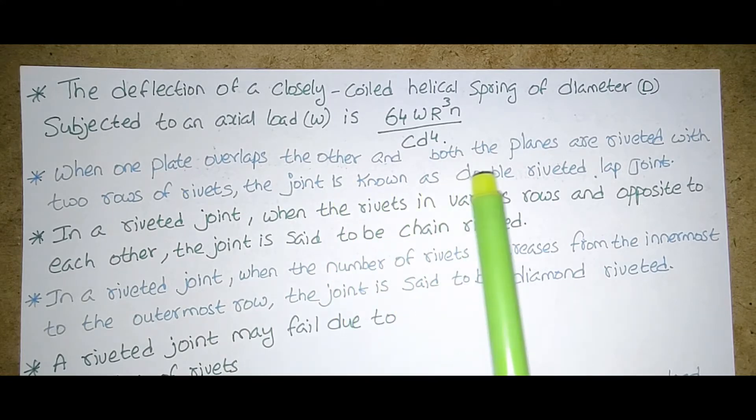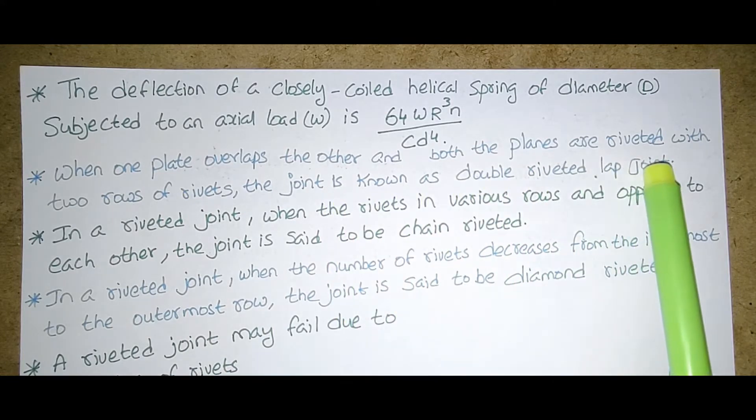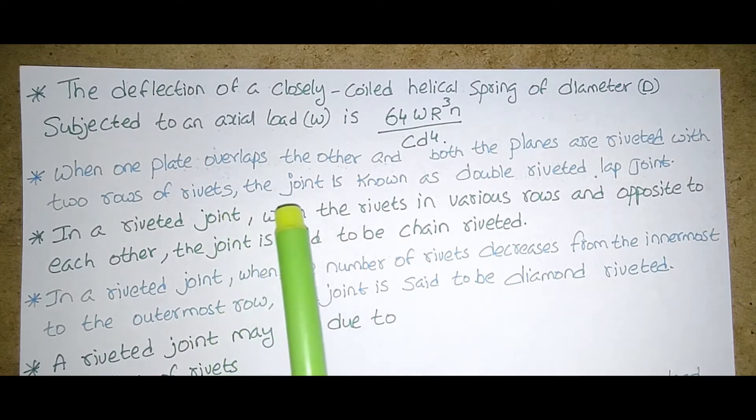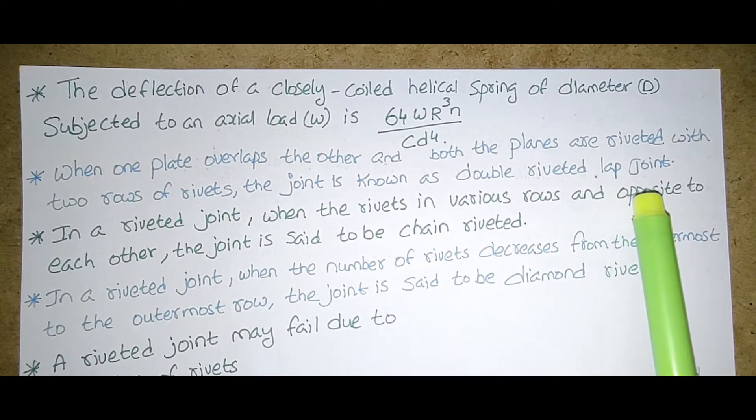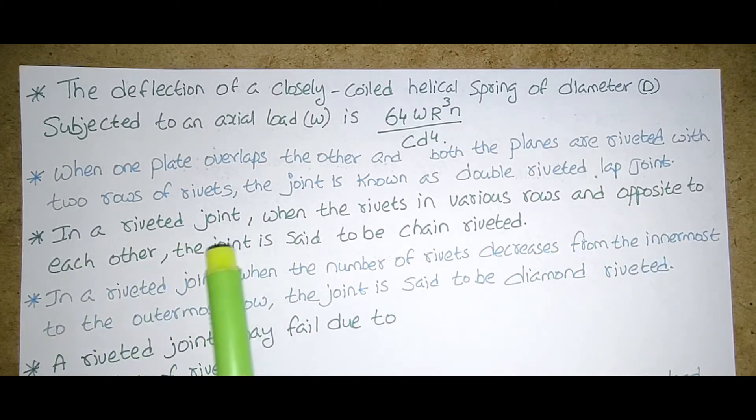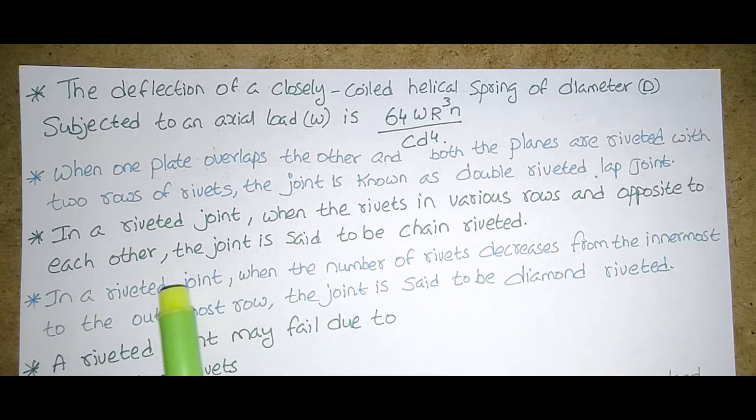When one plate overlaps the other and both the planes are riveted with two rows of rivets, the joint is known as double riveted lap joint. In a riveted joint when the rivets in various rows are opposite to each other the joint is said to be chain riveted.